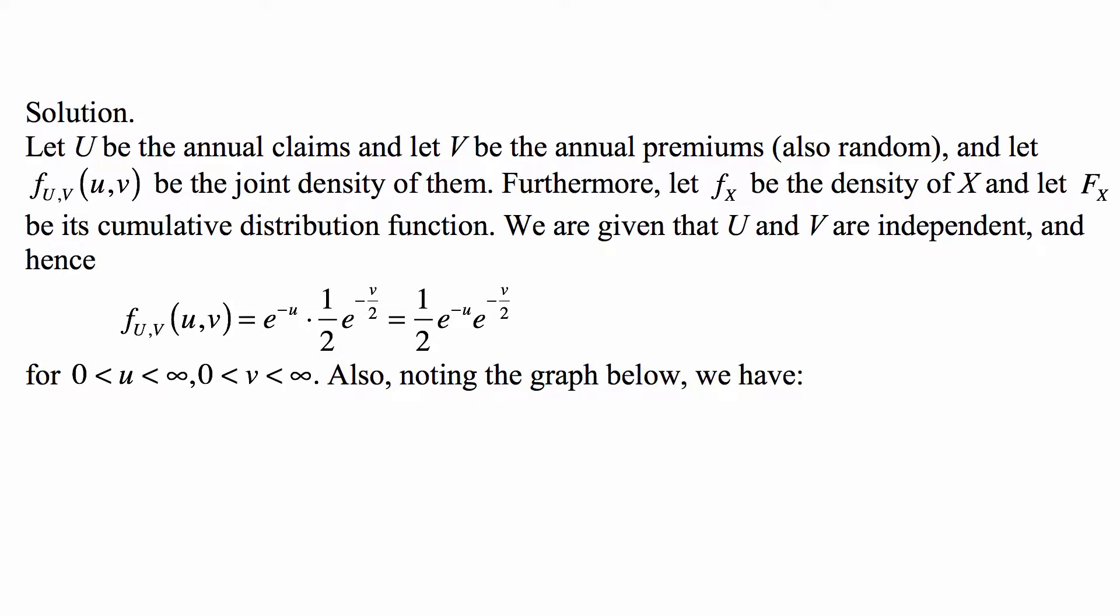Let us write U for the annual claims and V for the annual premiums, both random variables, and let f_{U,V}(u,v) be the joint density of them. Let f_X be the density of X and F_X be its cumulative distribution function. We are given that U and V are independent, and therefore the joint density is a product of individual densities. The first one is exponential with mean 1, so its density is e^{-u}.